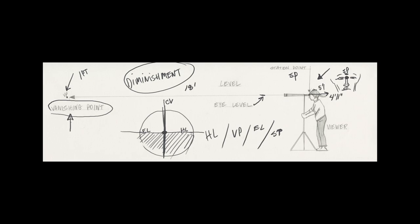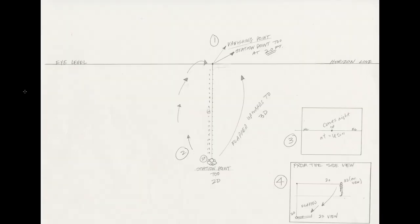So our vocabulary: horizon line (HL), vanishing point (VP), eye level (EL), and station point (SP). Station point is where we look from. And we also haven't talked about center of vision (CV) yet — that comes straight down the middle of her station point. This middle point or vanishing point also connects up to our station point. Let's say this distance between her station point and the vanishing point is 18 feet away.